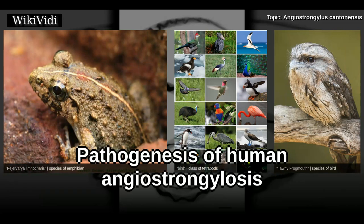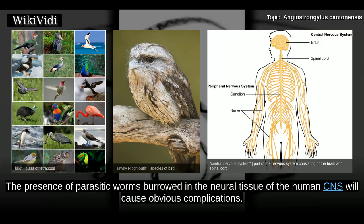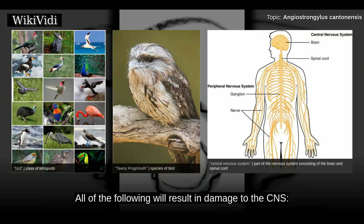Pathogenesis of Human Angiostrongyliasis. The presence of parasitic worms burrowed in the neural tissue of the human CNS will cause obvious complications. All of the following will result in damage to the CNS.